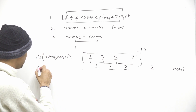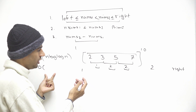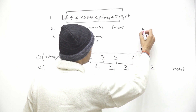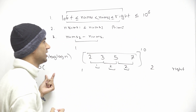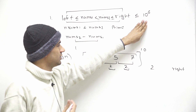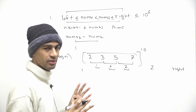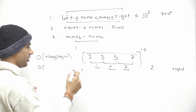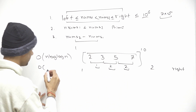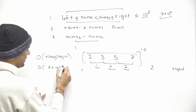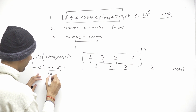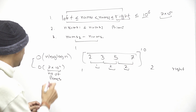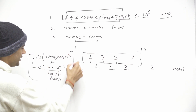We start traversing from the first prime number greater than or equal to left, till the last prime number smaller than or equal to right, and find the minimum difference. According to the constraints, left and right are both smaller than or equal to 10^6. The number of prime numbers up to 10^6 is around 7×10^4, so the overall time complexity should get accepted.